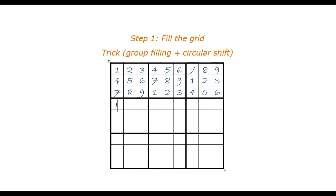Now we do the fourth row. We notice that if we do a shift of one position, it will satisfy all constraints. Do the same thing for the fifth row, which is a circular shift of three slots of the first row, and do the same thing for the sixth row — fill it with a circular shift of three slots of the fifth row.